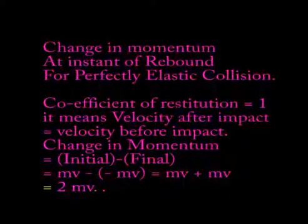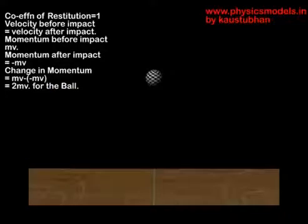So this is the case which happens with gas molecules. So anyway, the change in momentum is initial minus final as usual and you get mv minus of minus mv, which is 2mv for the ball.